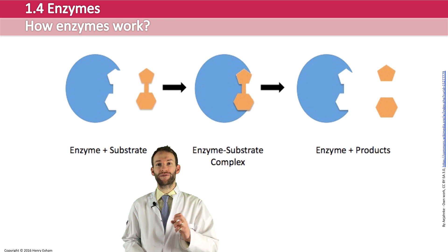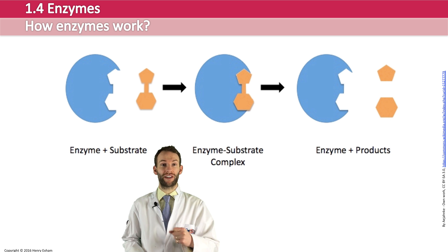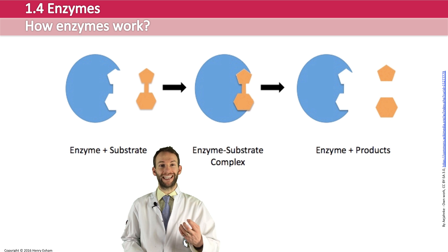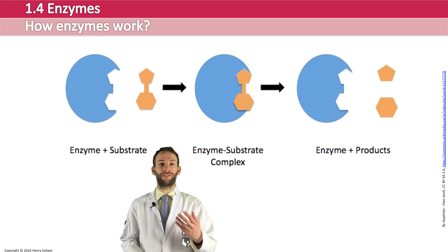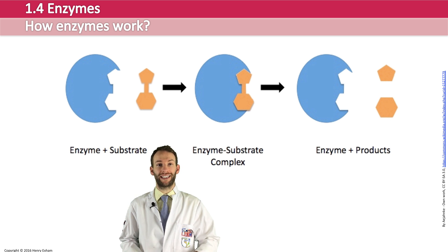For an enzyme-substrate complex to form and for a reaction to take place, they've got to collide — an enzyme and a substrate have got to bump into each other. These molecules are moving around with a given amount of kinetic energy in straight lines, and if they bump into each other and collide with enough energy, then a reaction will take place. Affecting the concentrations of enzymes and substrates is going to have an effect on the rate of reaction because there's more or less chance of them colliding. Changing the kinetic energy of these molecules is also going to affect collision frequency.